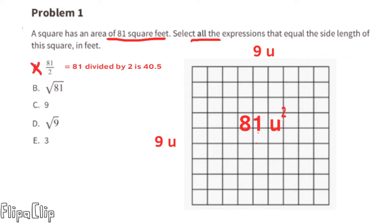B is the square root of 81. The square root of 81 is 9, so we will select B, and we'll also select C, which is 9. We will not select D, the square root of 9, because the square root of 9 is 3. And we will not select E because 3 is not equal to 9.